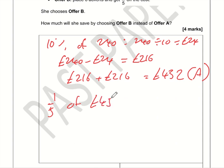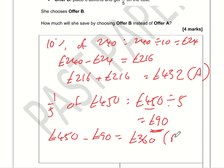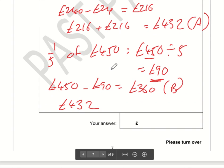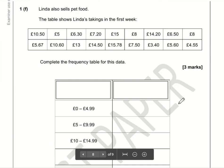Offer B: place six adverts and get one-fifth off. One-fifth of £450 is 450 divided by 5. 45 divided by 5 is 9, so 450 divided by 5 is £90. She gets £90 off, so 450 minus 90 = £360. The saving is the difference: £432 minus £360. Counting up from 360 to 400 is 40, plus another 32, gives a saving of £72.